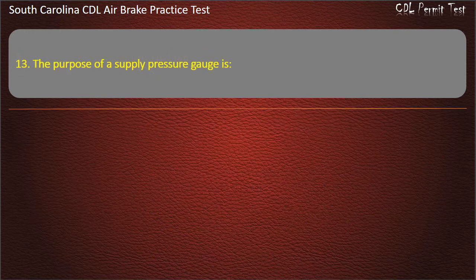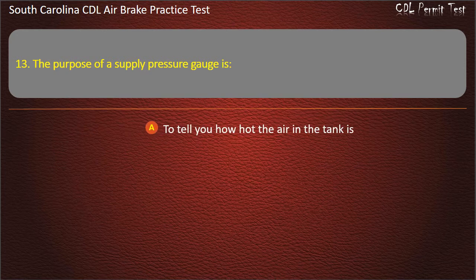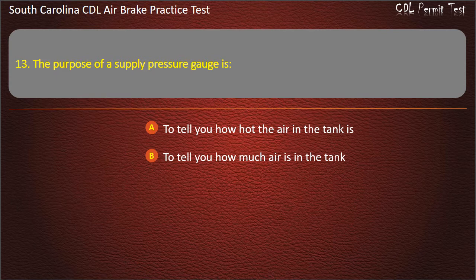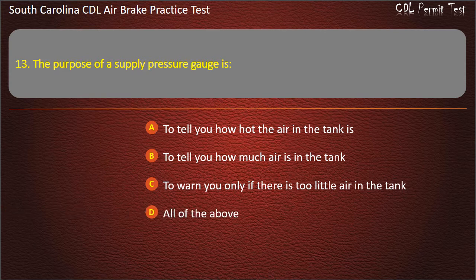Question 13: The purpose of a supply pressure gauge is — to tell you how hot the air in the tank is; to tell you how much air is in the tank; to warn you only if there is too little air in the tank; or all of the above. Answer: To tell you how much air is in the tank.